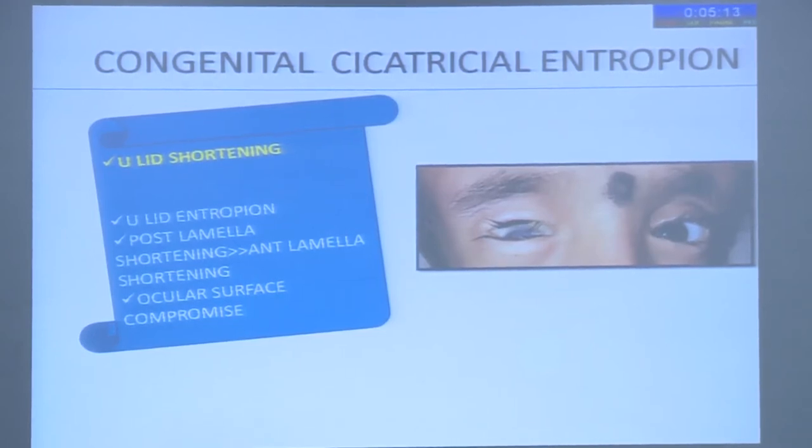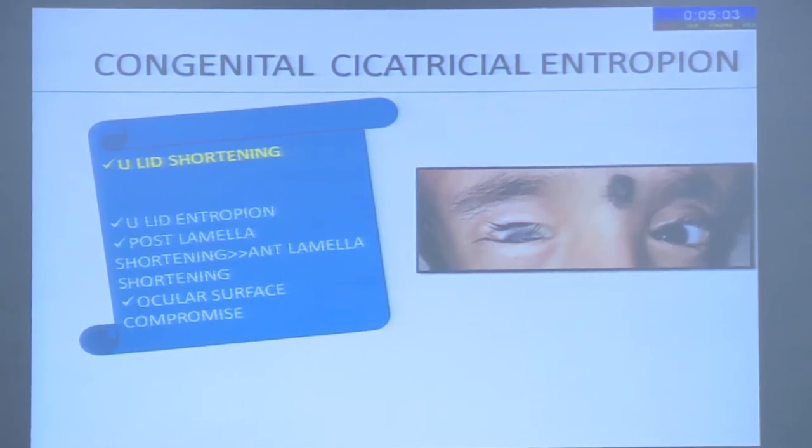On cursory look, this looked like a congenital cicatricial entropion where the posterior lamellar shortening — the conjunctival side — was much more than the anterior lamellar shortening, because of which the eyelid turned inwards. As a result, the eyelashes were rubbing against the superior cornea, which caused a lot of ocular surface compromise.